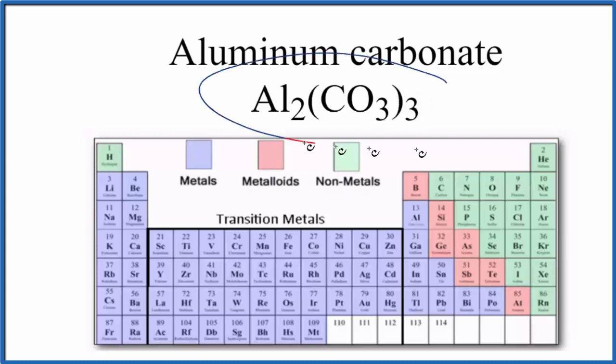Short answer is that the entire compound is an ionic compound. But when we look at the carbonate ion, the bond between the carbon and the oxygens—those bonds are going to be covalent.